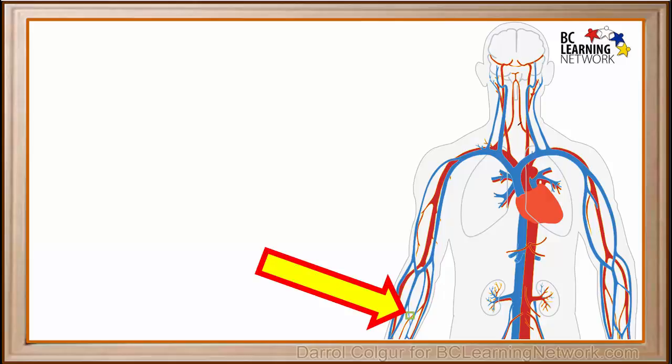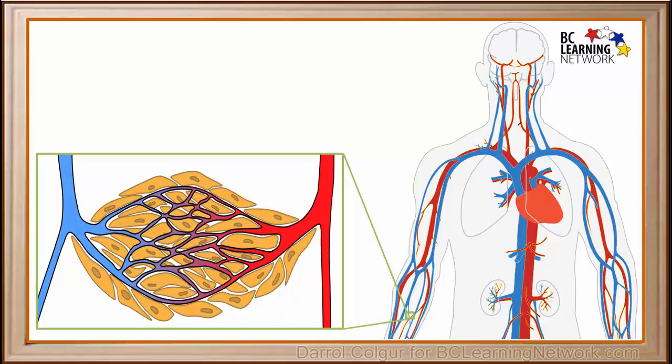We'll consider this small area inside the forearm. If we zoom in on this area, we see that capillaries between arteries and the veins come in close contact to muscle cells. Like all cells, muscle cells contain many organelles within their cytoplasm.